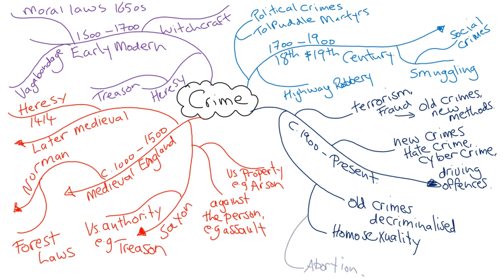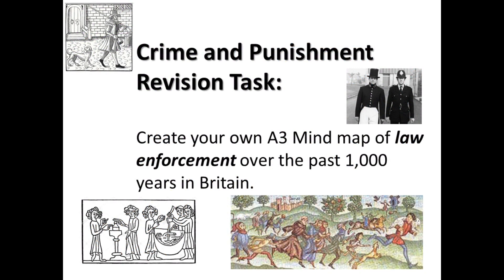There you've got, on one sheet of paper, a really good overview of crime over a thousand years, and it's pretty simple to produce. I'd like you to go away and use revision guides or your exercise books — or come and use textbooks at lunch — and create a similar A3 mind map to do with law enforcement. Thank you very much.